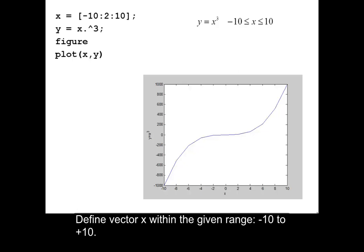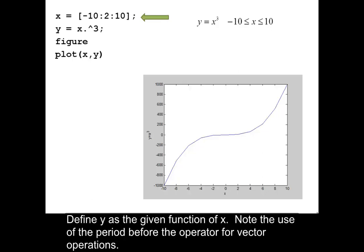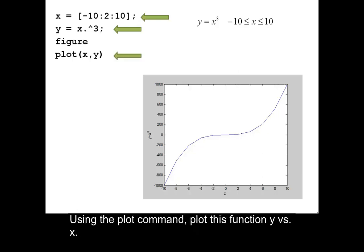Define vector x within the given range negative 10 to positive 10. Define y as the given function of x. Note the use of the period for the operator for vector operations. Using the plot command, plot this function y versus x.